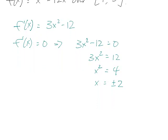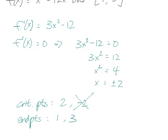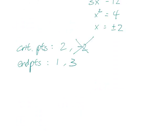So in this problem, the critical points are 2 and minus 2, and the endpoints are 1 and 3. But remember that we're only concerned with the interval [1, 3], and minus 2 isn't in that interval, so we shouldn't do anything with it. It's not in the interval that we care about, so we just toss it out.